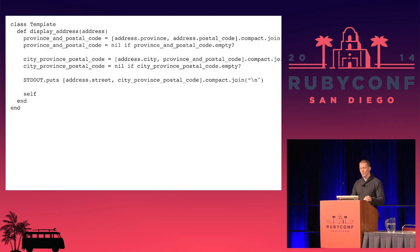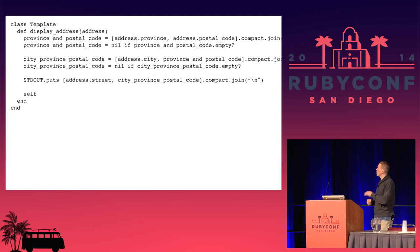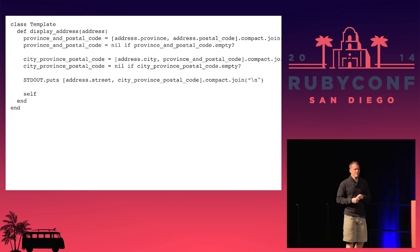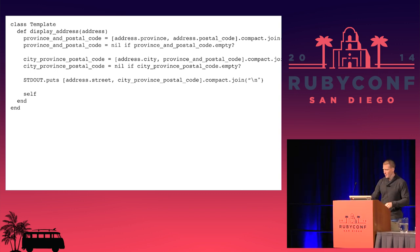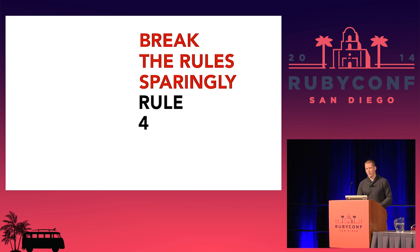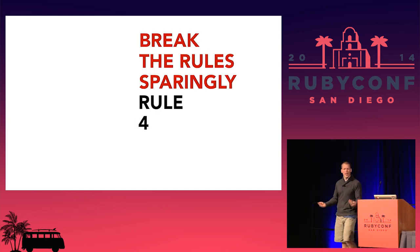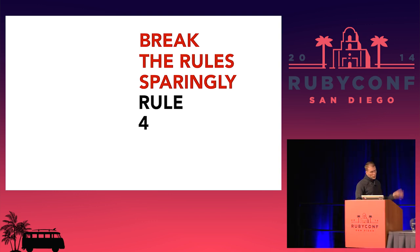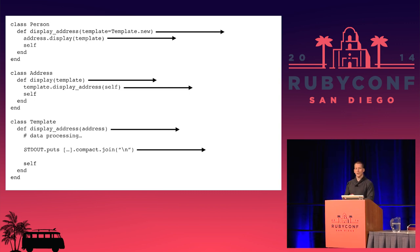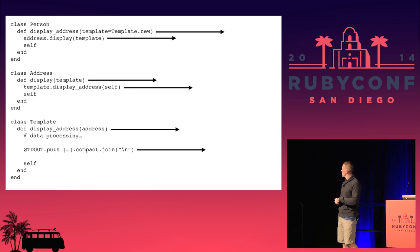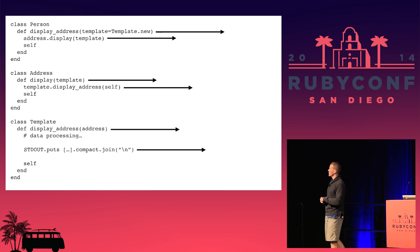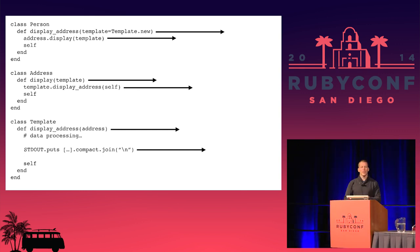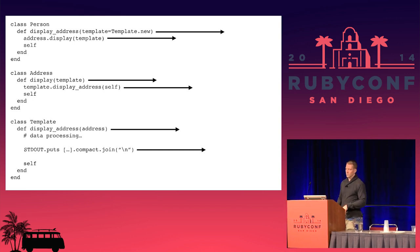Let's look at the template again. We've got queries all over the place — address province, address postal code — we're getting information out of this thing. Didn't we say queries were bad? This is rule number four that I didn't mention: you can break the rules. A value object is intended to be queried, and only that. It simplifies our parameters. We can break that rule for value objects. But we can look at this code and now see that everything is traveling eastward.